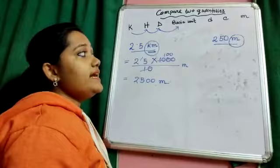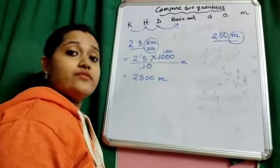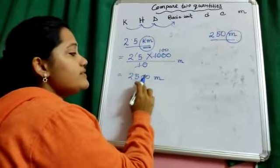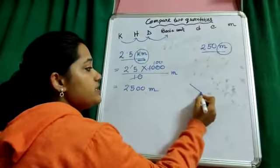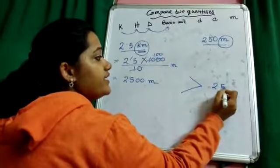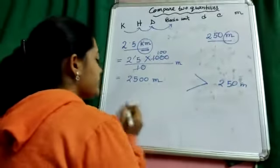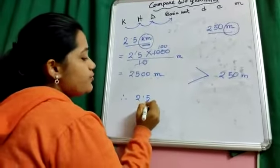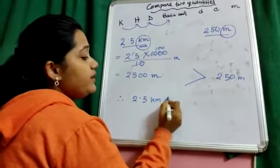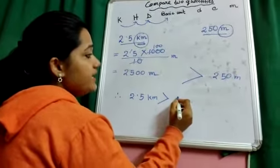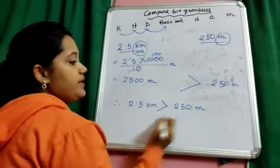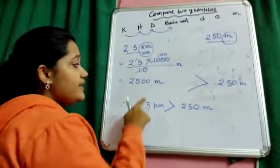And you see, another quantity is given as 250 meter. Now, easily we can compare that 2,500 meter is obviously greater than 250 meter.